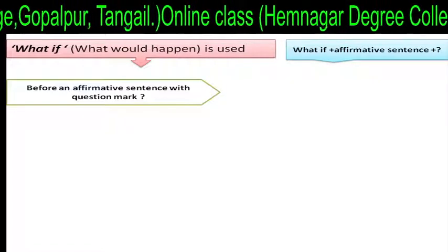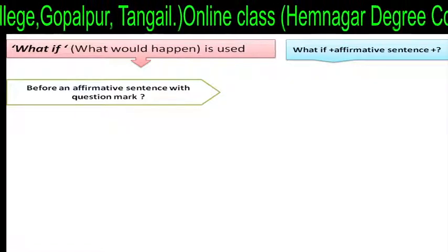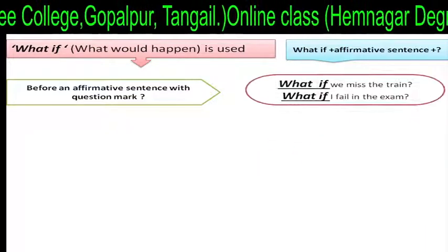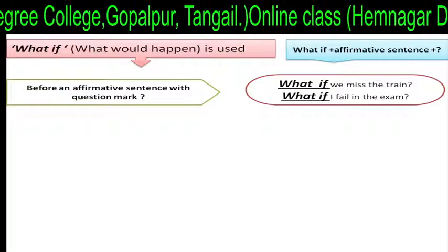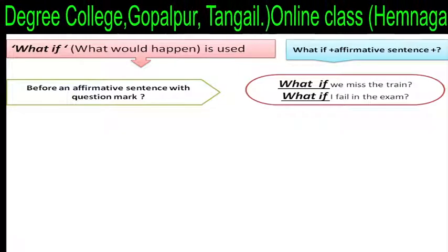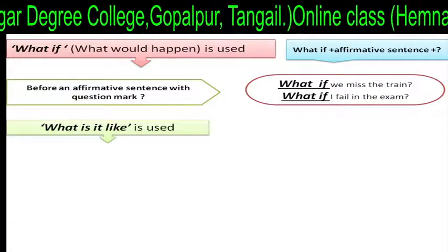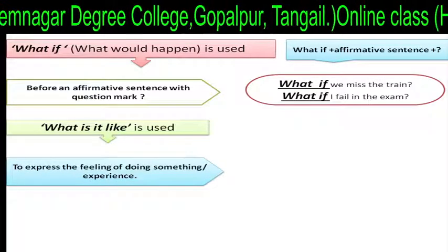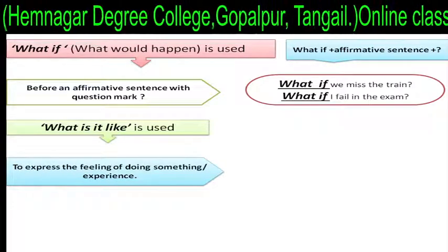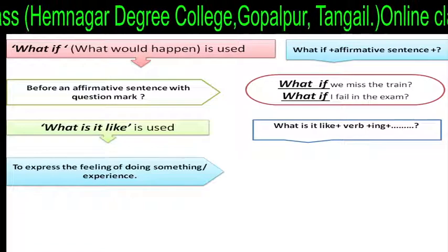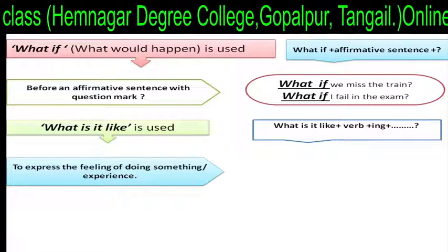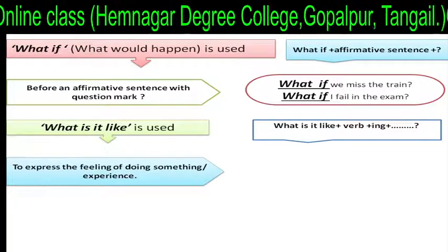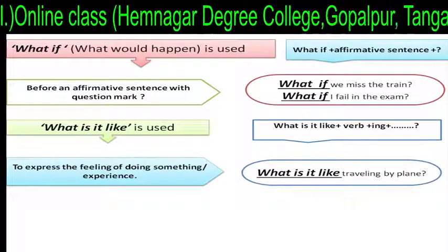What if is used before an affirmative sentence with a question mark. For example: 'What if we miss the train?' 'What if I fail in the exam?' What is it like is used to express the feeling of doing something or experience. Structure: 'What is it like' plus verb plus -ing plus extension plus question mark.